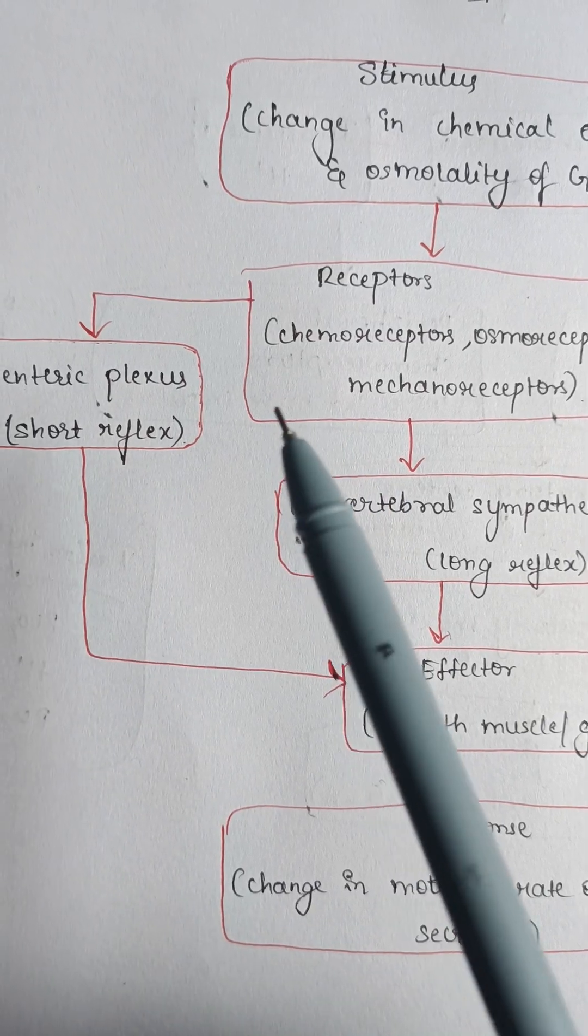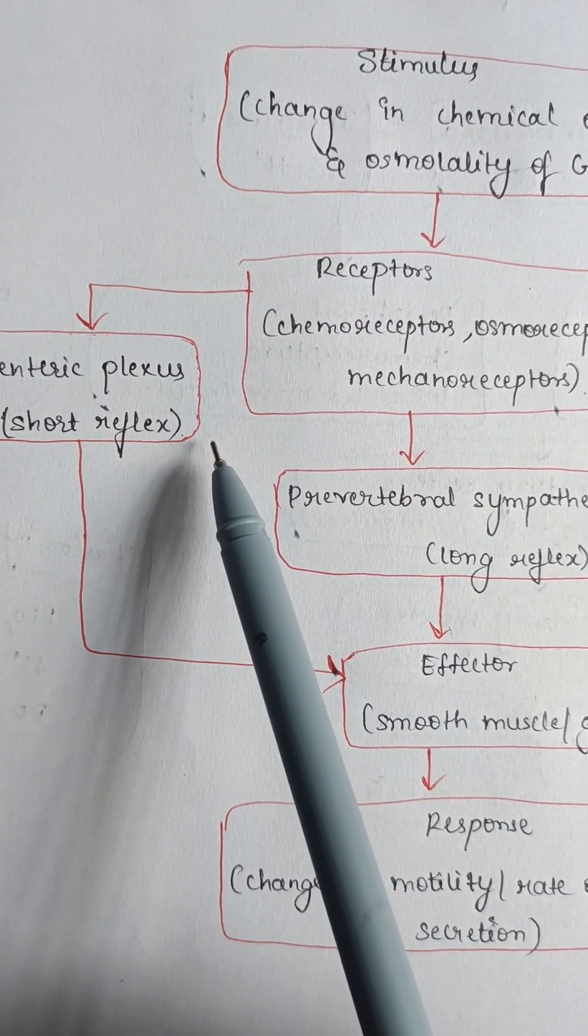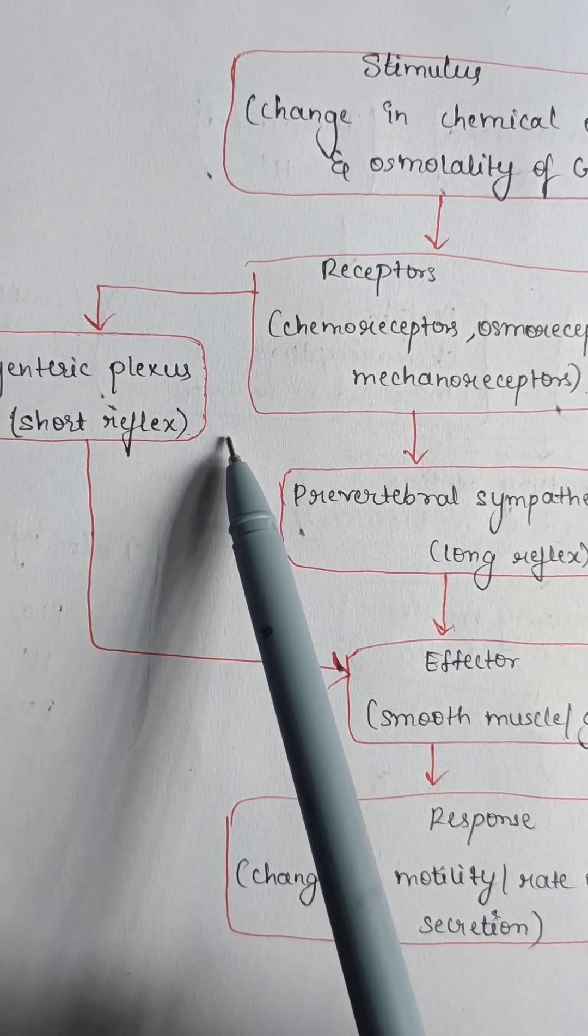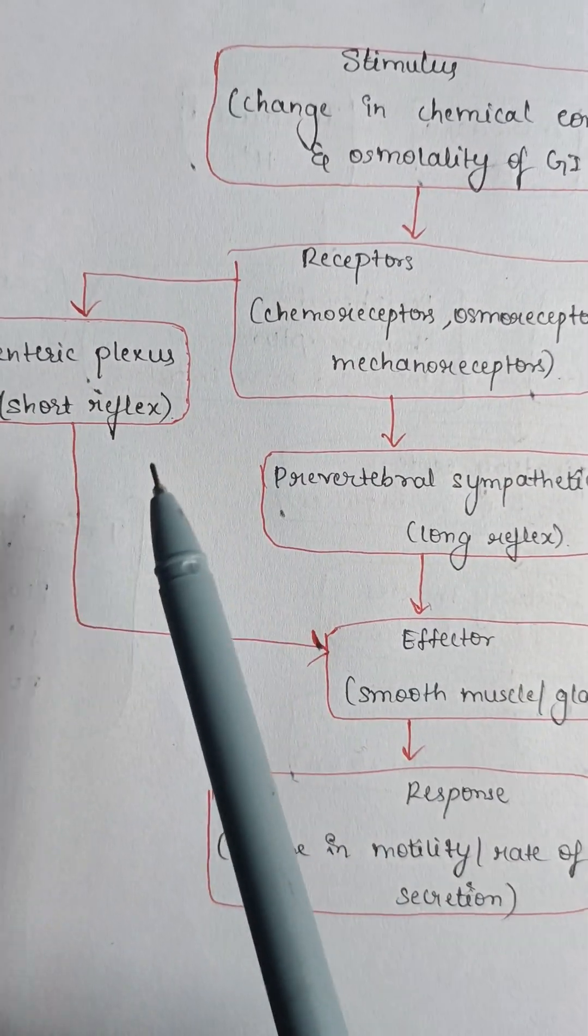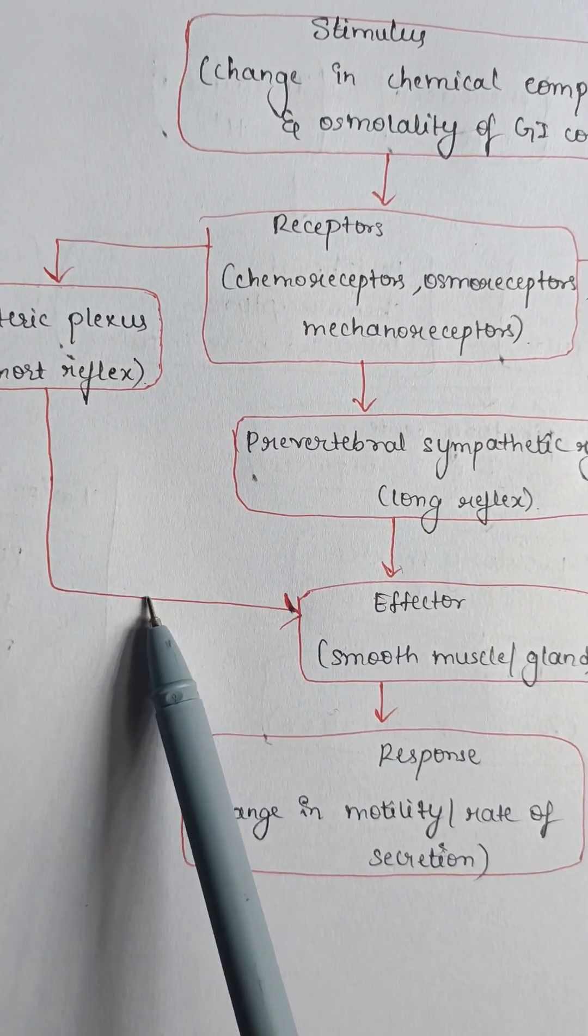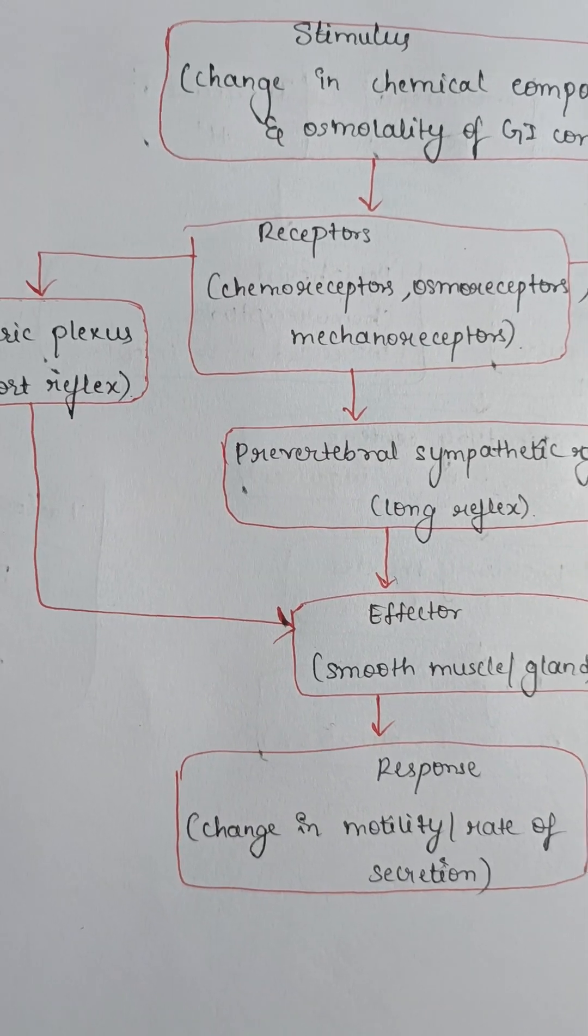Stimulation of these receptors mediates a local reflex which involves myenteric plexus and intestinal smooth muscles or glands. An example for this is enterogastric reflex.